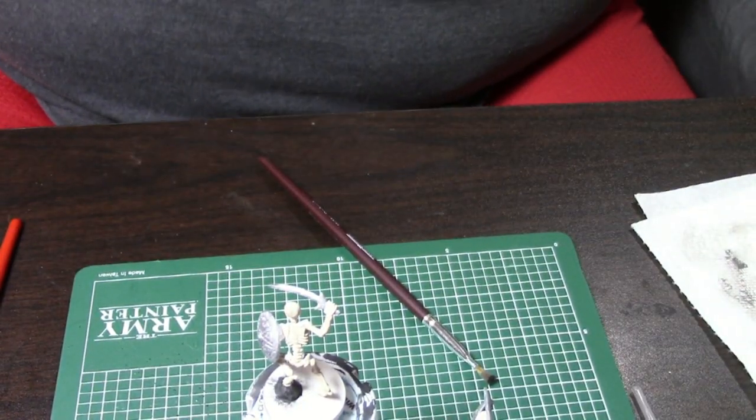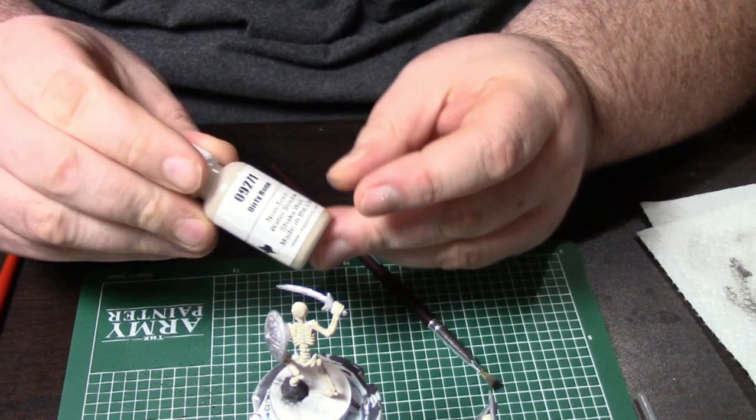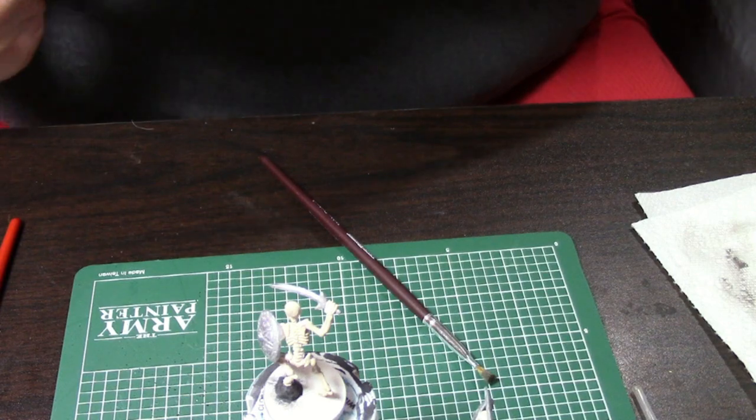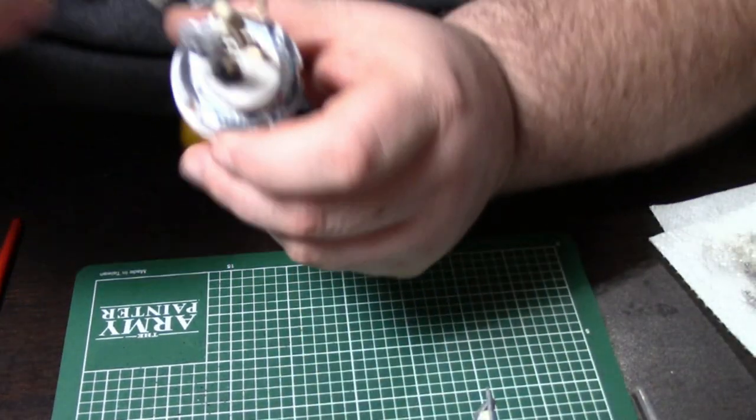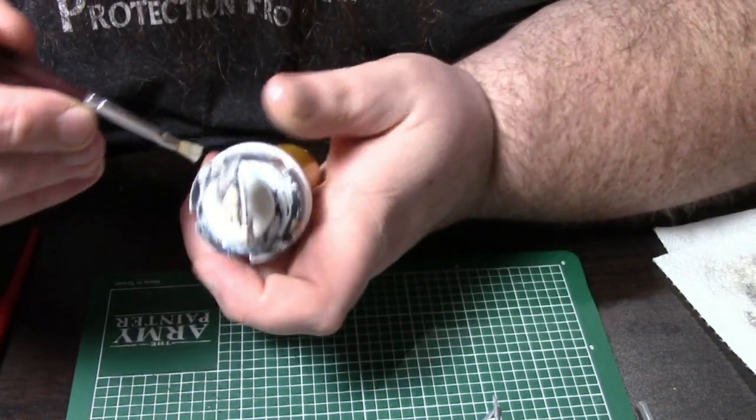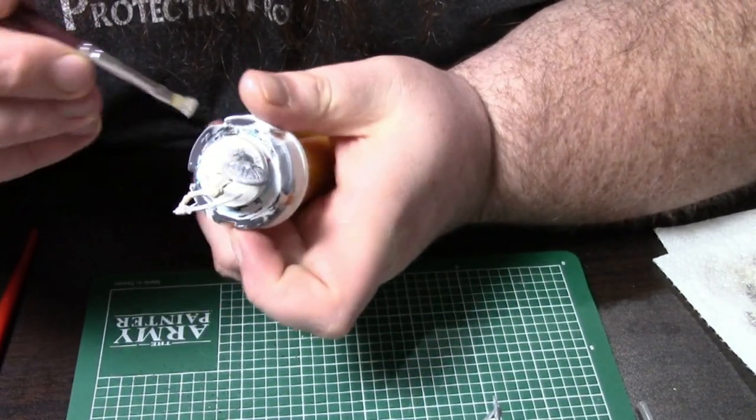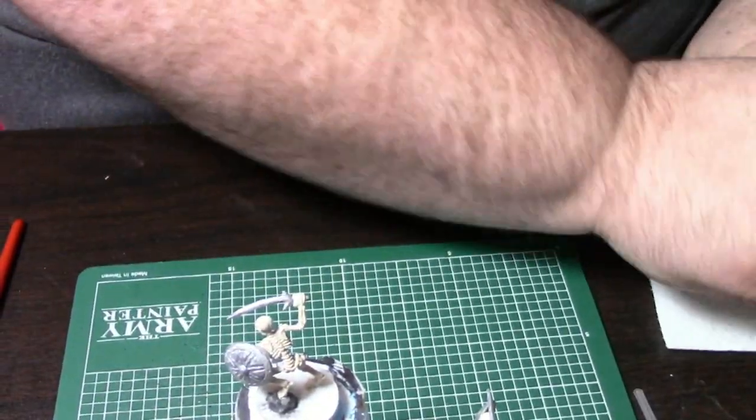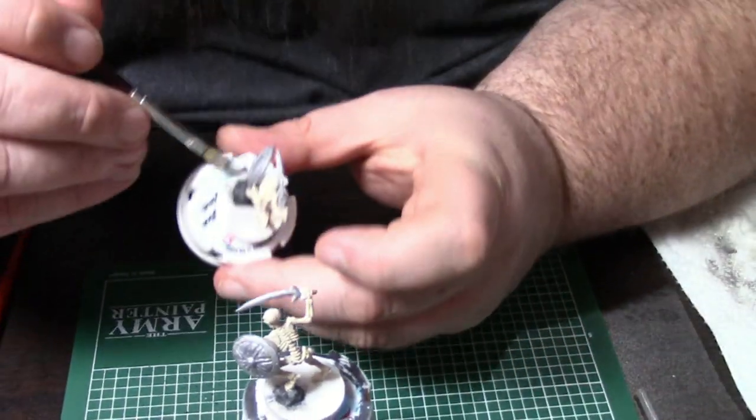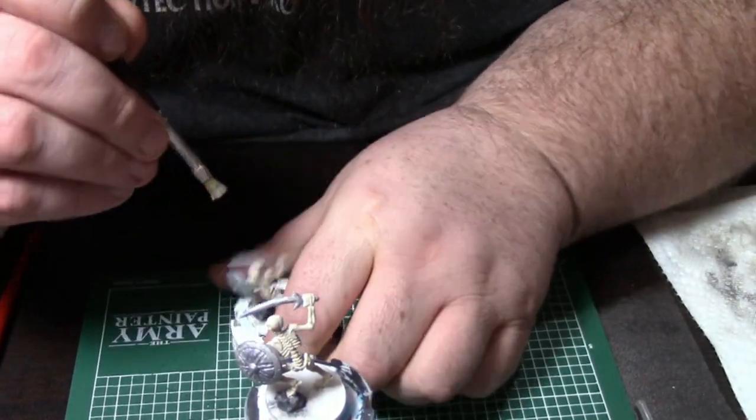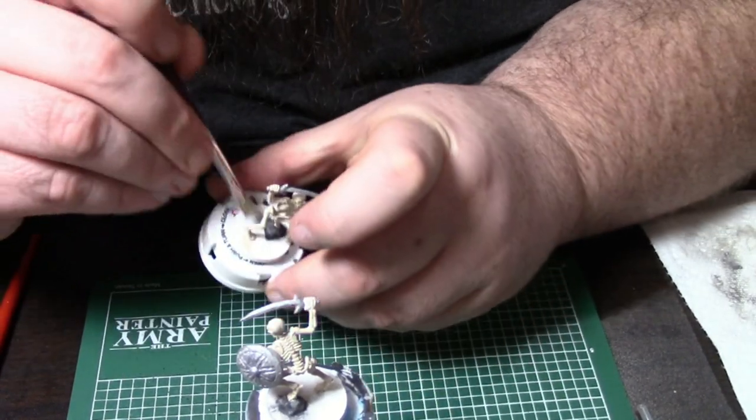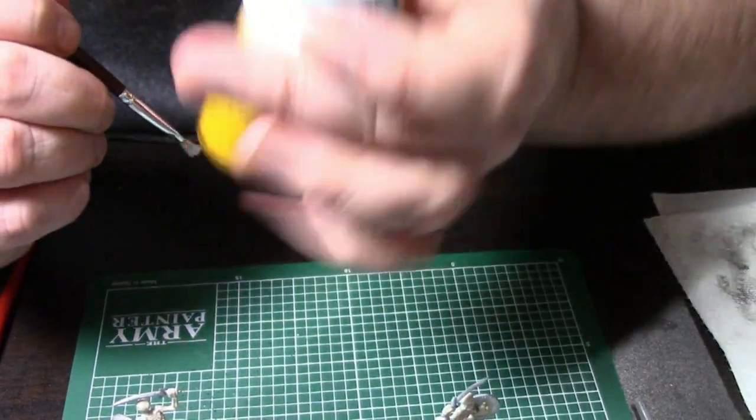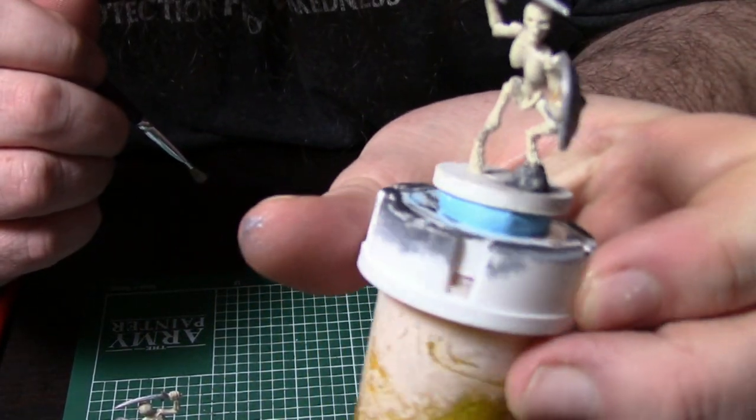Now what I'm going to do is go back to the dirty bone and dry brush again on top of that, just to highlight it some more. Got a little too much paint on my brush, but that's okay. Not all is lost. It kind of looks stony.